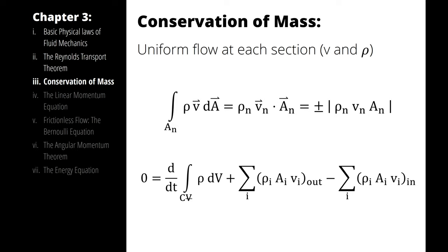Note that this final equation is the same mass balance we applied in thermo: the change in mass equals mass entering minus mass exiting. We're just writing it in terms of quantities more likely to be known in a fluid mechanics problem. Furthermore, we're allowing for density to change in the case of compressible flow, and by starting from the Reynolds Transport Theorem and simplifying, we're less likely to fall into a trap of hidden assumptions behind equations we've already written down.